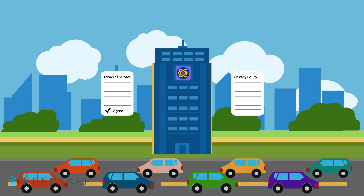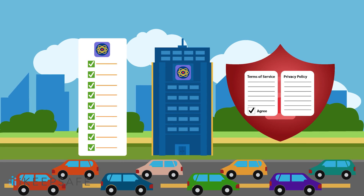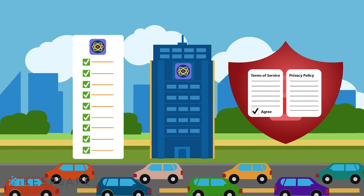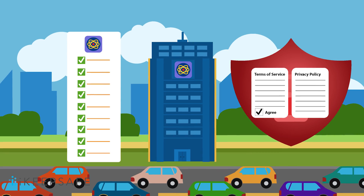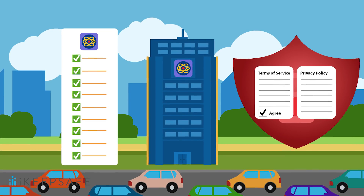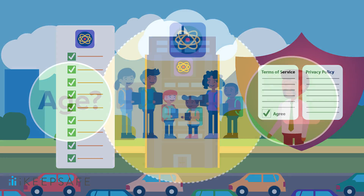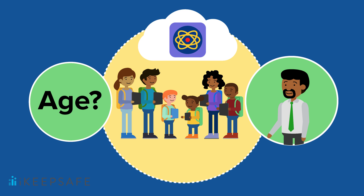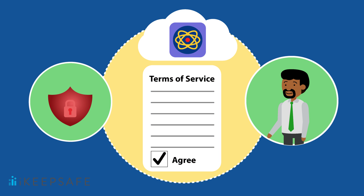Like the privacy policy, the Terms of Service is primarily a legal document to protect the company. However, it also serves a safety function, setting the rules for what is appropriate and acceptable content and conduct while using the website or application. It may also help you to understand important aspects of using the service, such as the acceptable minimum age for users. The Terms of Service isn't the only way to review safety practices, but it is always a helpful tool in the process.